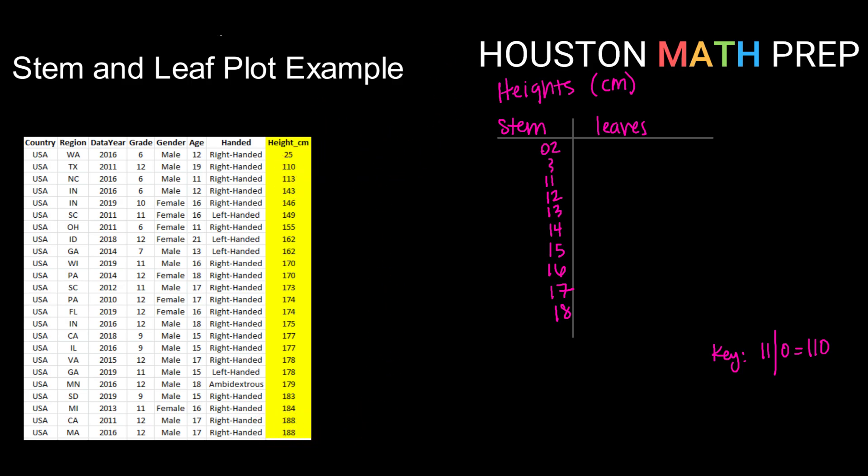So now I'm going to go in and fill in my leaves. My first leaf is my data point of 25. So 02 and then 5 makes the data point 25.